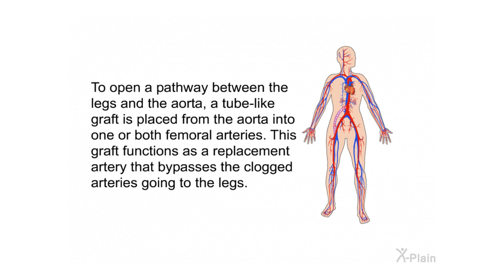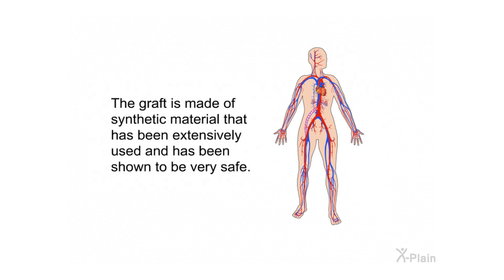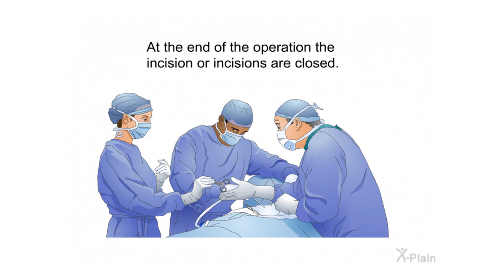To open a pathway between the legs and the aorta, a tube-like graft is placed from the aorta into one or both femoral arteries. This graft functions as a replacement artery that bypasses the clogged arteries going to the legs. The graft is made of synthetic material that has been extensively used and shown to be very safe. At the end of the operation, the incision or incisions are closed.